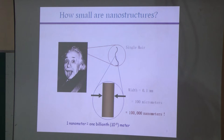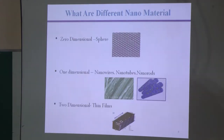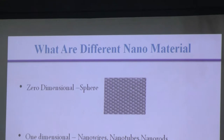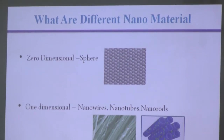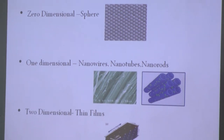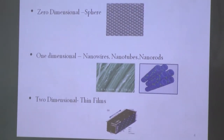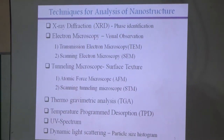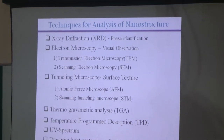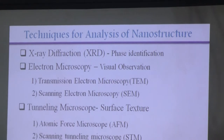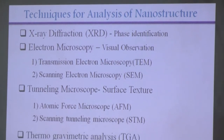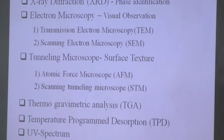When looking at different nanomaterials, we can have different dimensions: 0-dimensional, where all dimensions are in the nanorange; 1-dimensional, including nanowires, nanotubes, and nanorods; and 2-dimensional. These characterization techniques were recently established, though some like XRD are very old but quite useful in phase identification of nanomaterials.